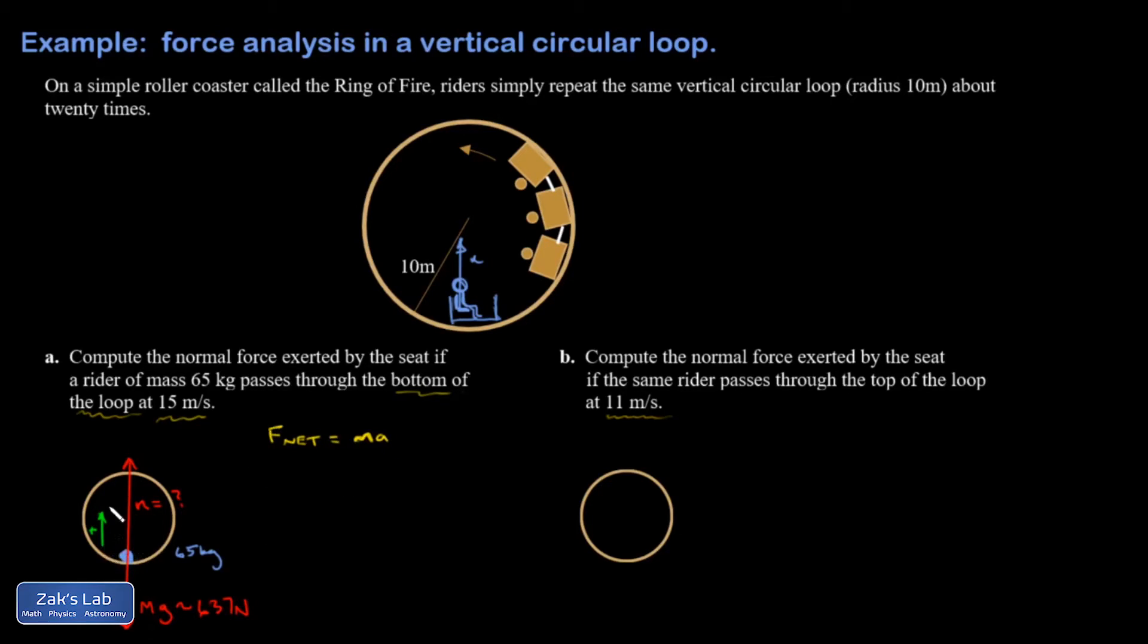So I made upward positive because I knew that's the direction the acceleration was going to be, and that makes my life easier. So I have N minus MG equals M v squared over r. And I have the radius of curvature, and I have v as 15 meters per second.